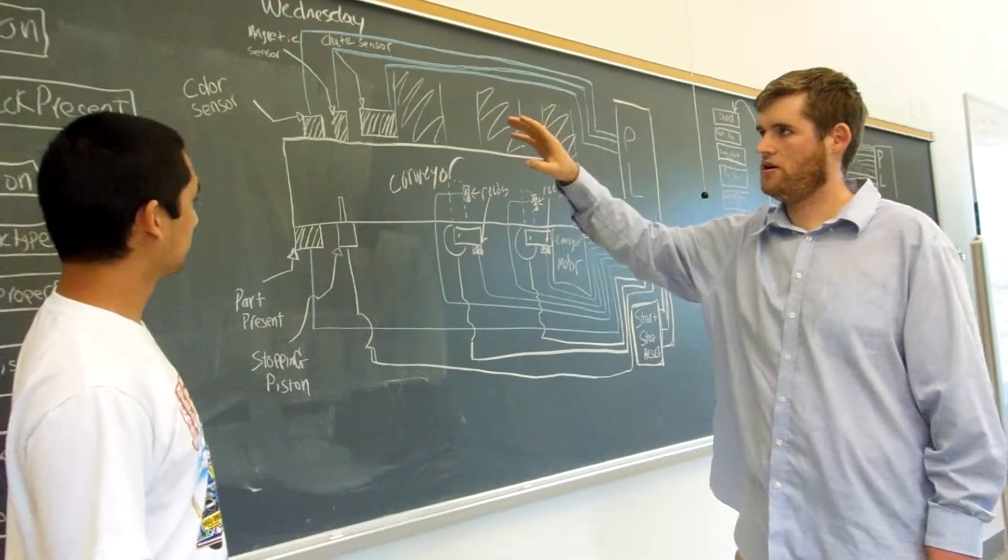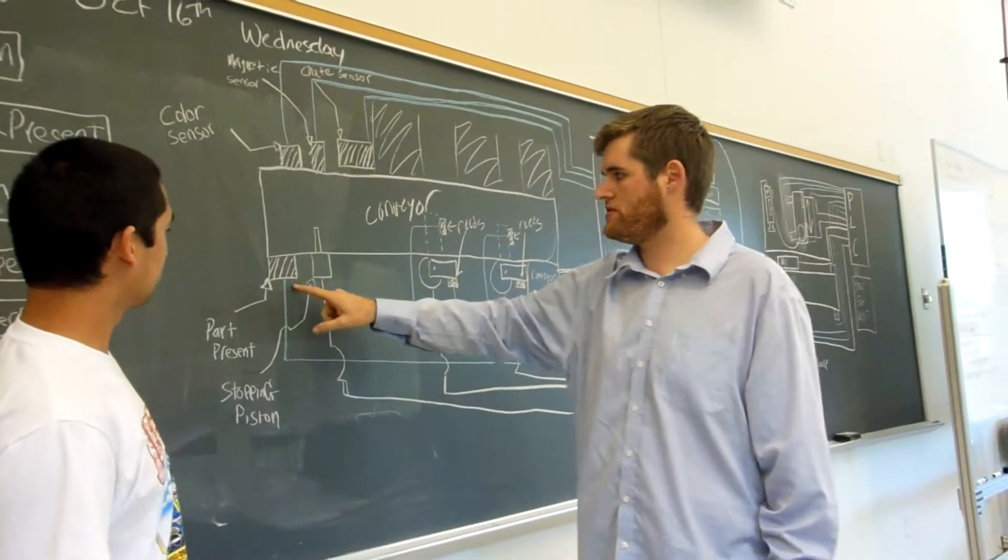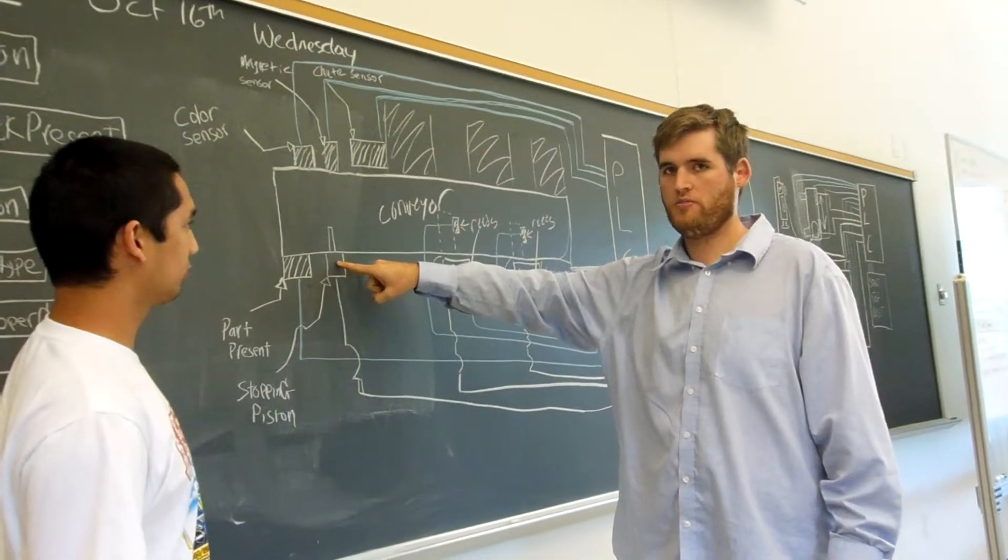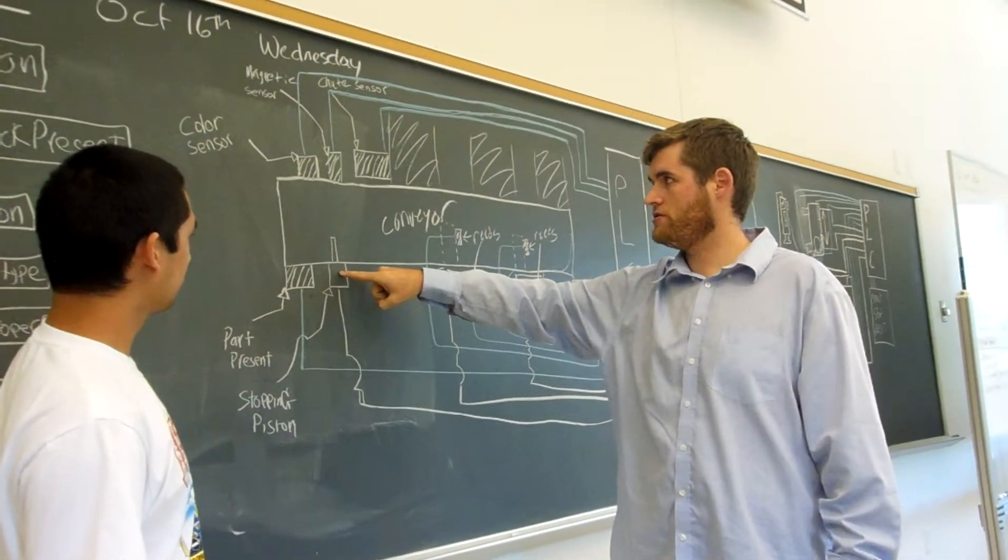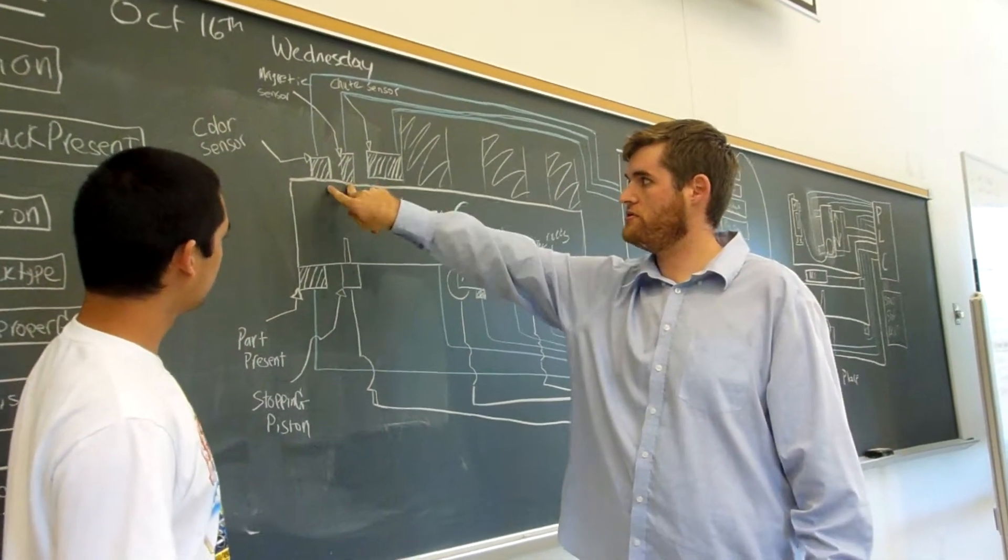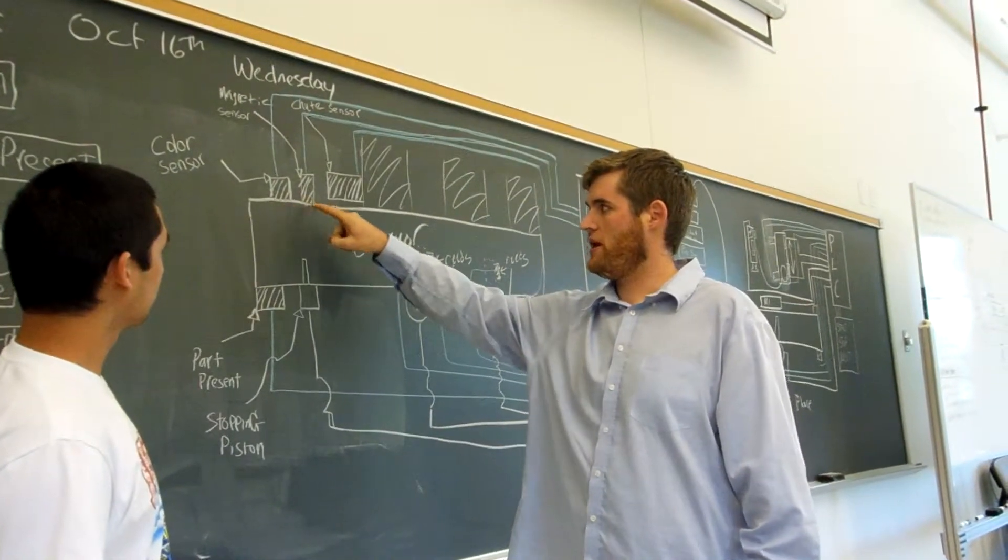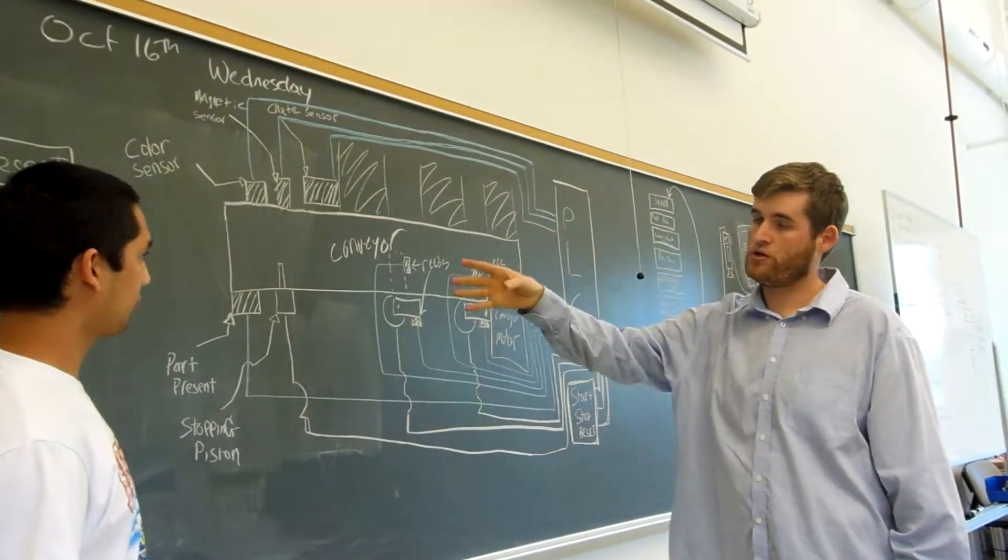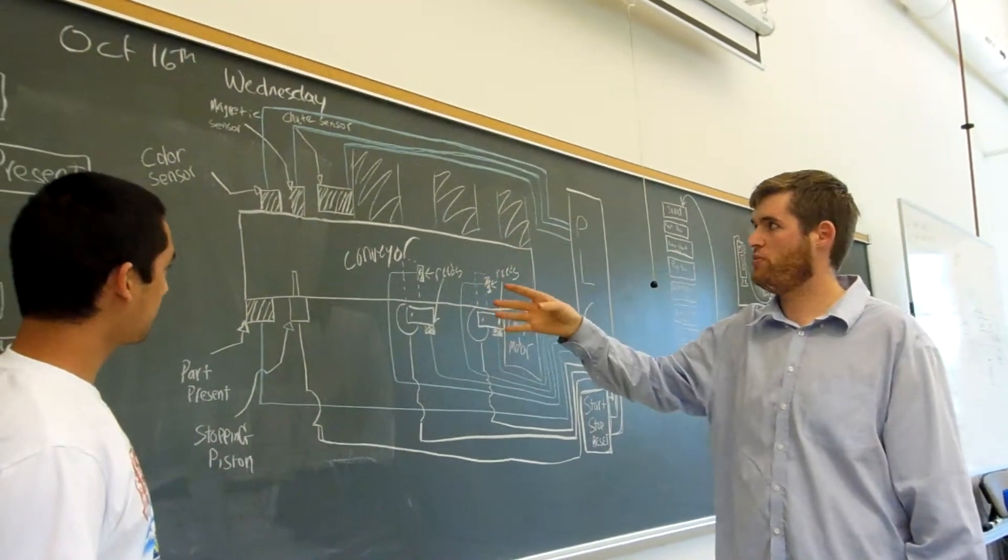Okay. So, basically, just like our sequential diagram here, you have a part-present sensor, that's the beginning of the cycle. This stopping piston should be extended at the beginning of the cycle. So, then it stops here at these two sensors, and then you have your color sensor and your magnetic sensor. And based on the combination of which one of those trips, it determines which puck it is.